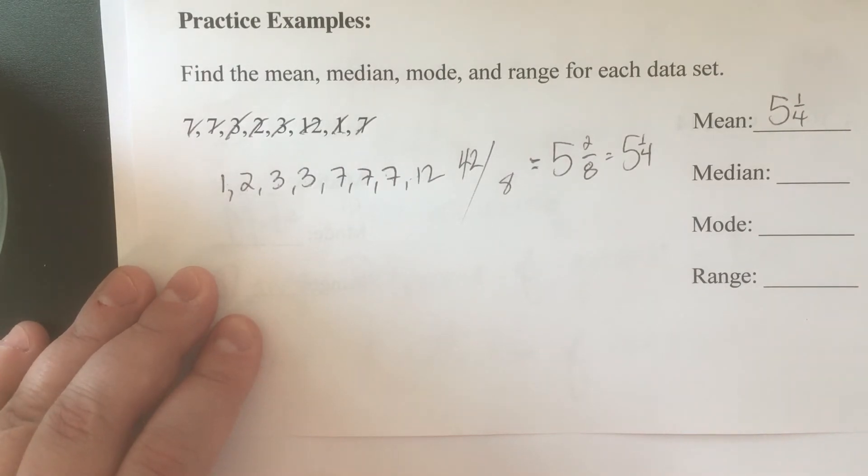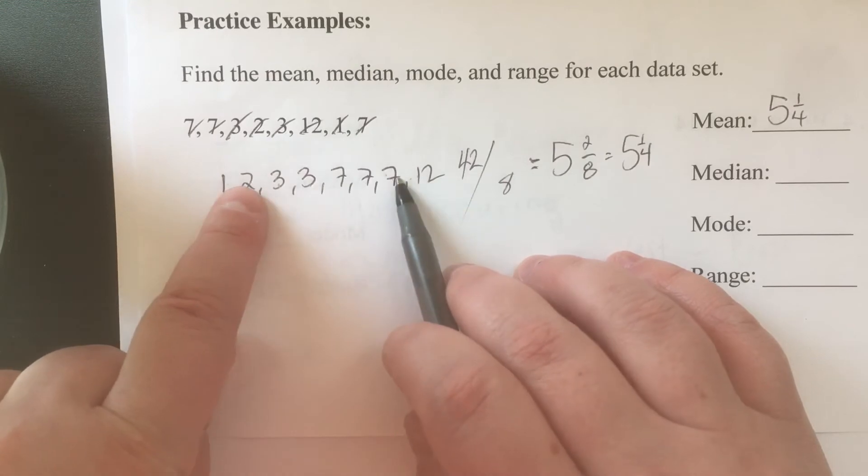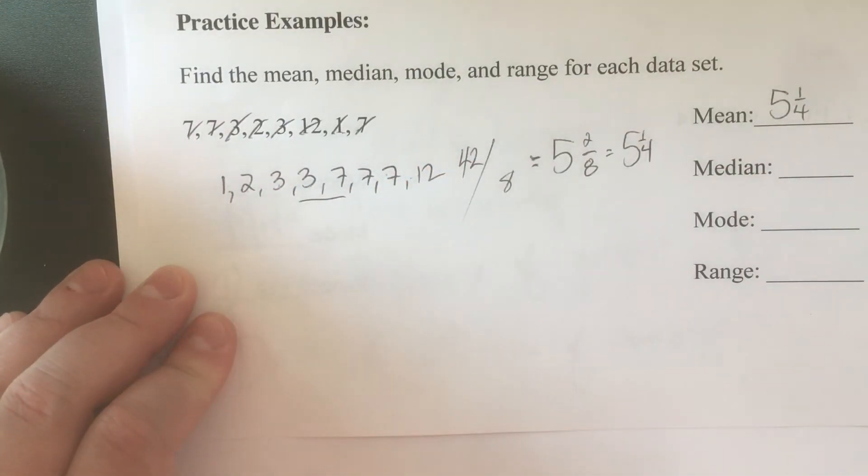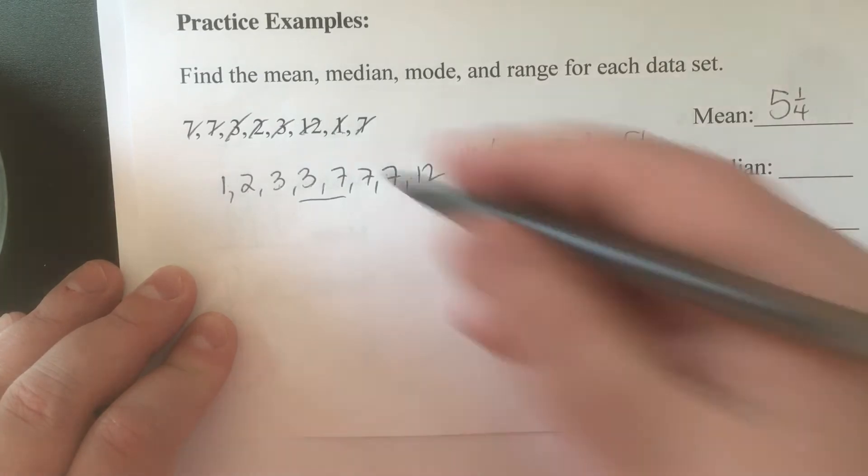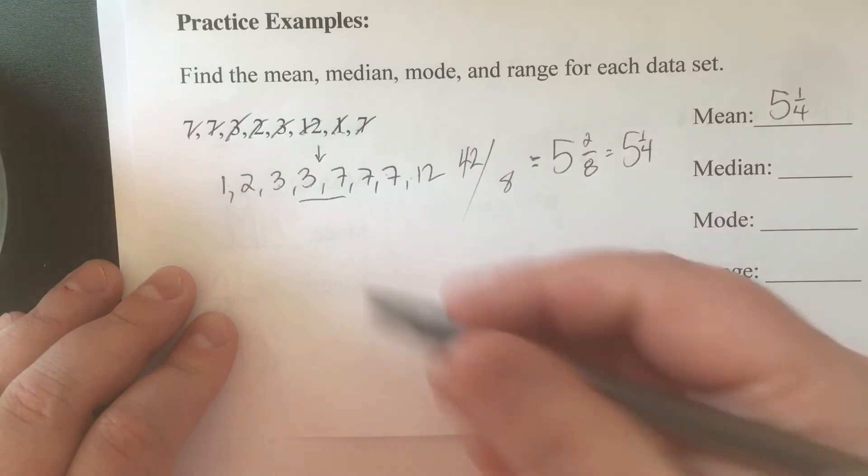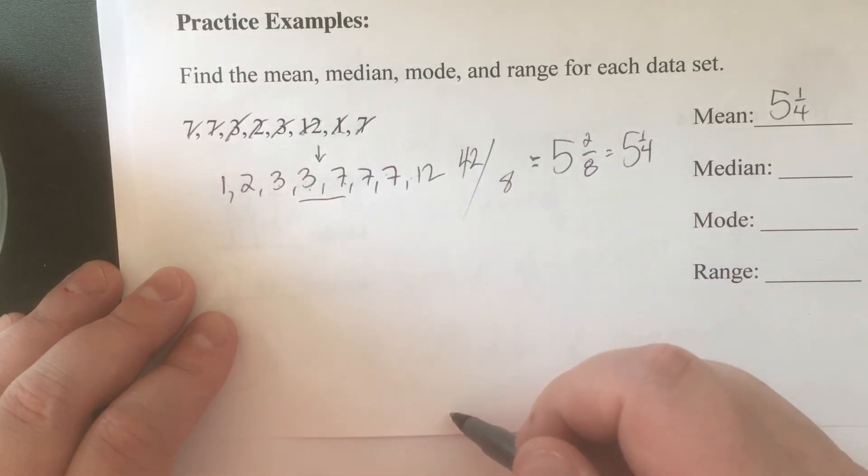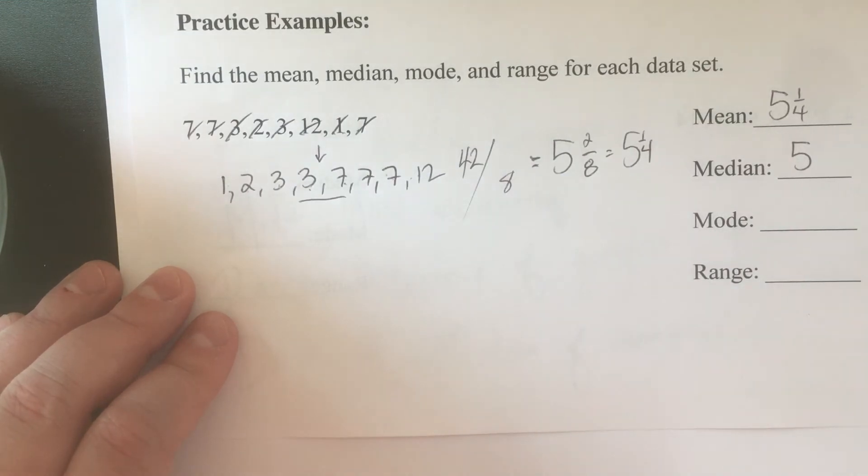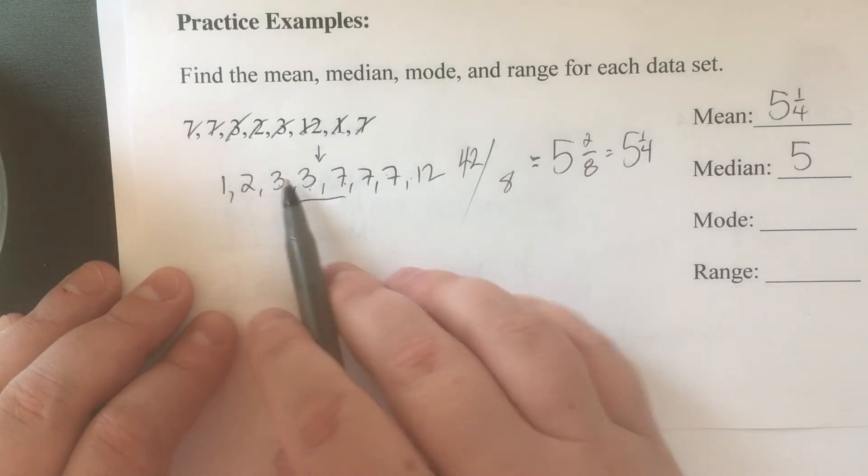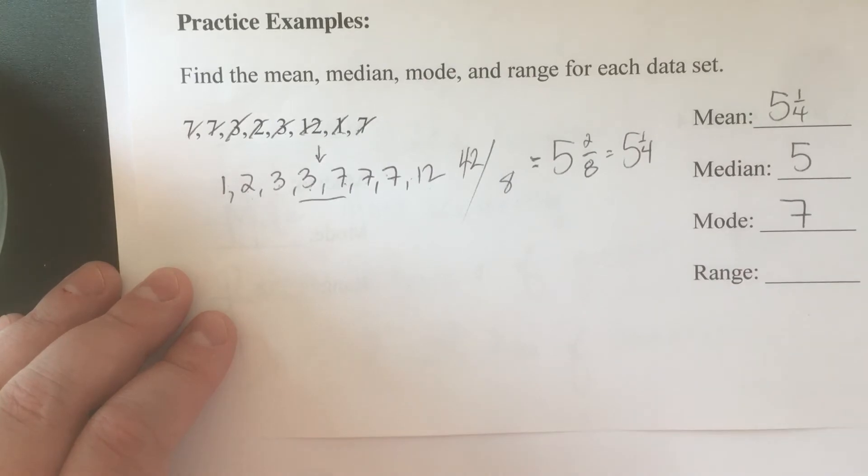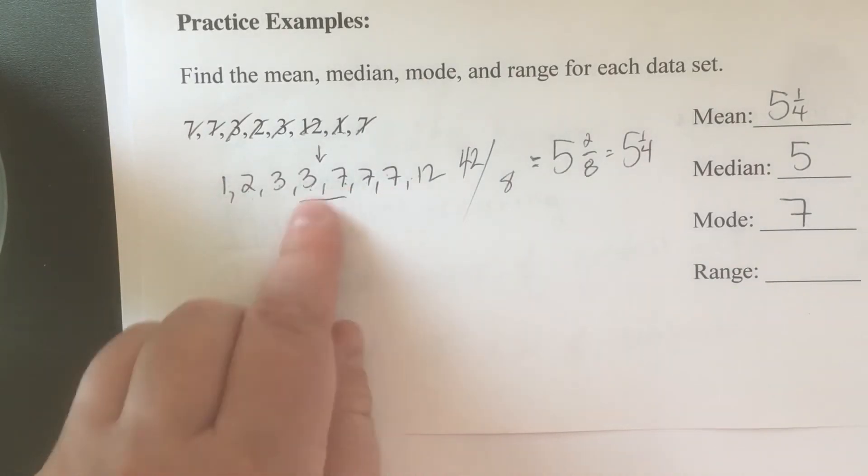The median is the middle number. So we start on the outside - here's our middle: 3 and 7. Who remembers what we do to find the number in between? You find the average. 3 plus 7 is 10 divided by 2 is 5. Mode - most occurring number - is 7. And the range: largest is 12, smallest is 1, so 12 minus 1 is 11.